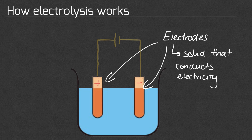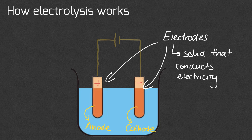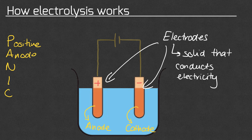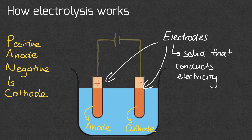One electrode is positive and the other electrode is negative. The positive electrode is called the anode and the negative electrode is called the cathode — you need to remember the names of these electrodes. To help you remember the names we use the word PANIC: this stands for Positive Anode, Negative Is Cathode. So the positive electrode is called the anode and the negative electrode is called the cathode.